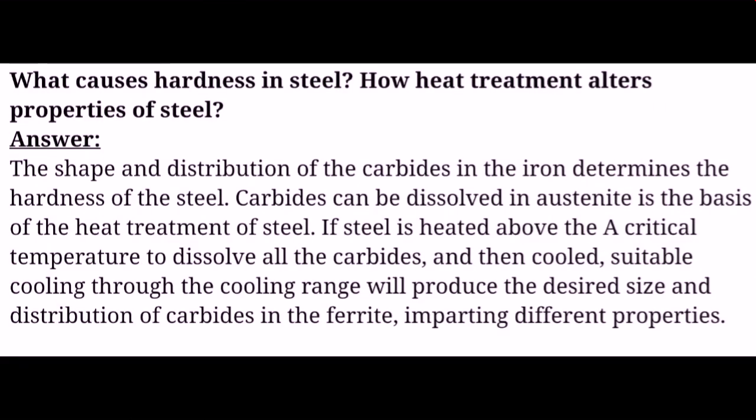What causes hardness in steel? How does heat treatment alter properties of steel? The shape and distribution of the carbides in the iron determines the hardness of steel. Carbides can be dissolved in austenite on the basis of heat treatment of steel. If steel is heated above the critical temperature to dissolve all the carbides, then cooled, suitable cooling through the cooling range will produce the desired size and distribution of carbides in the ferrite, imparting different properties.